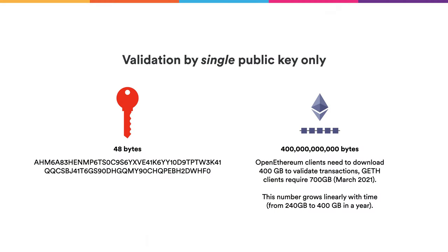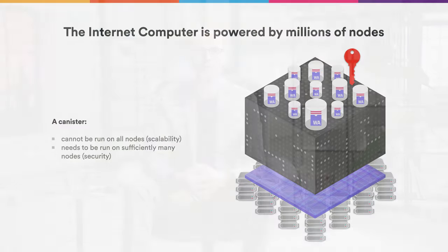Let's take a step back and see how the Internet Computer distributes canisters across nodes. We cannot run all canisters on all nodes because that wouldn't scale at all — we'd have millions of nodes running the same canisters. On the other hand, we need to run canisters on sufficiently many nodes to get the security properties we discussed. For that reason, we split all the nodes into subsets, each called a subnet. These subnets are sufficiently large, and different canisters are assigned to different subnets where they get run.